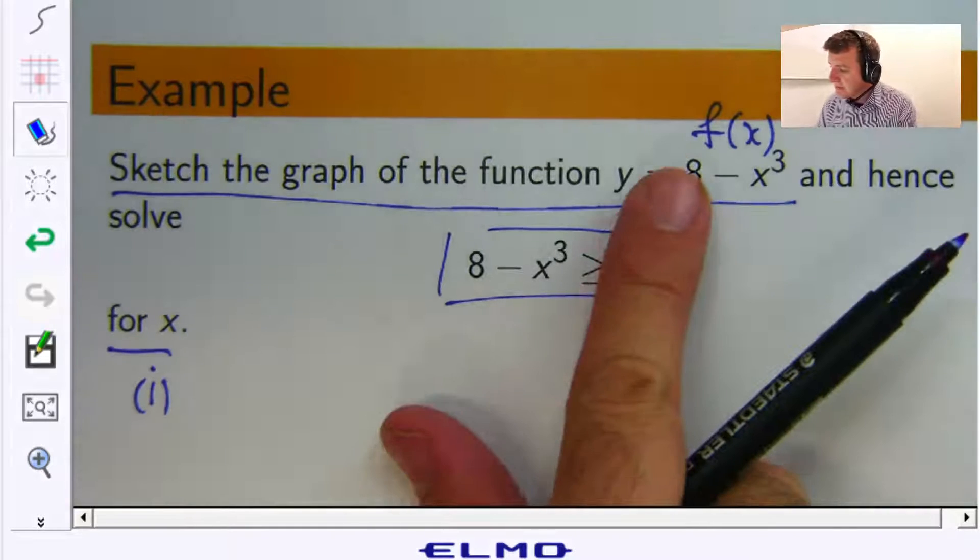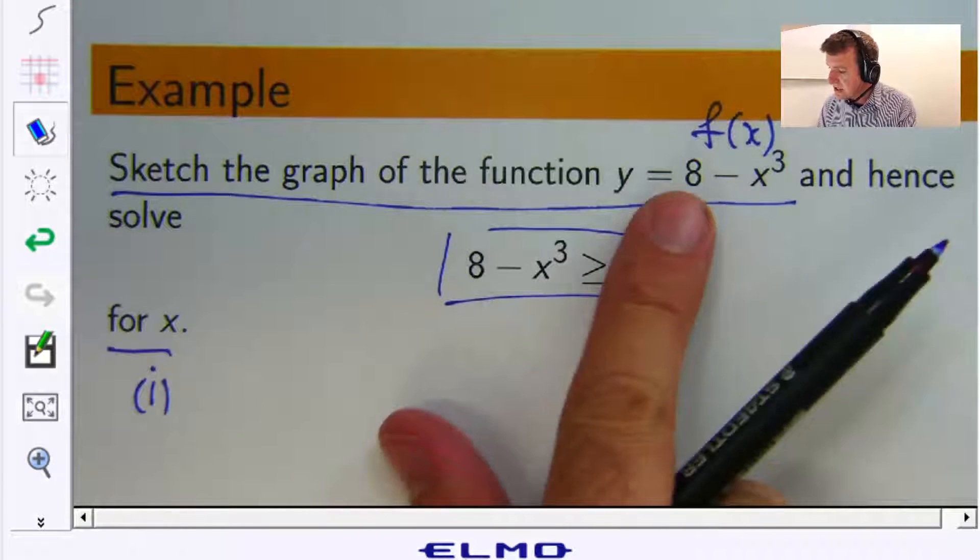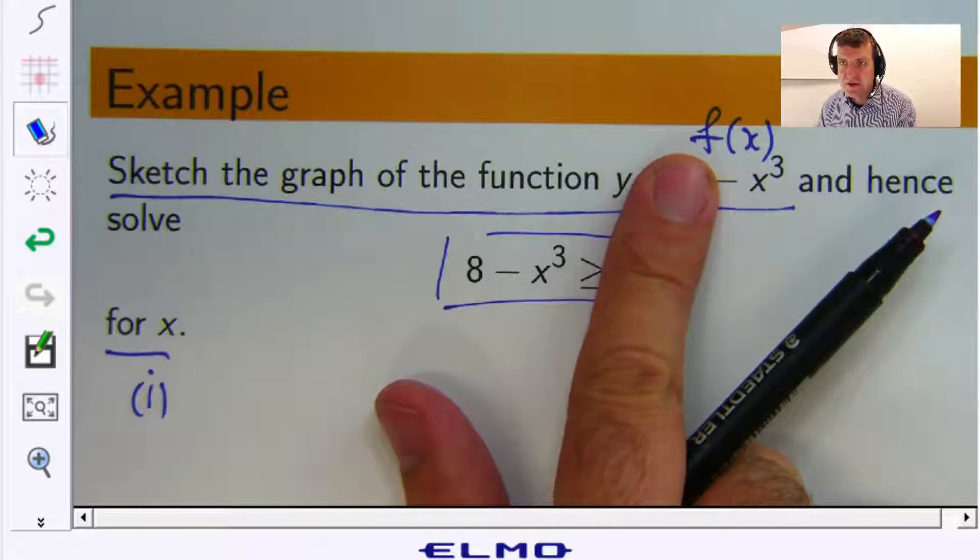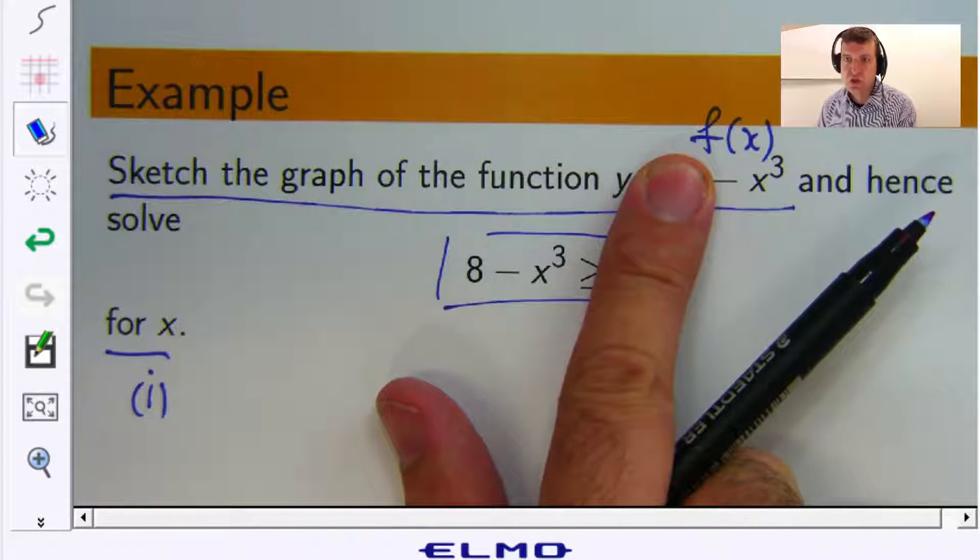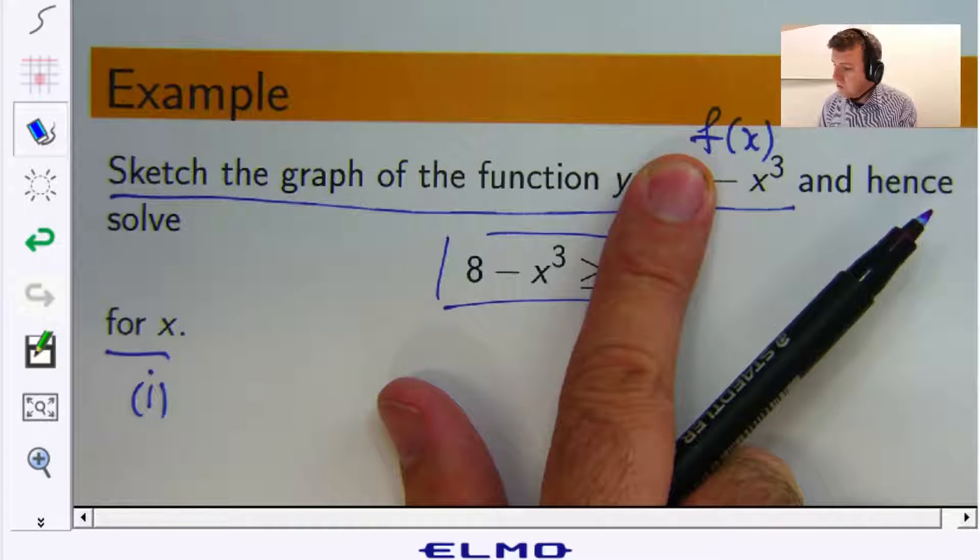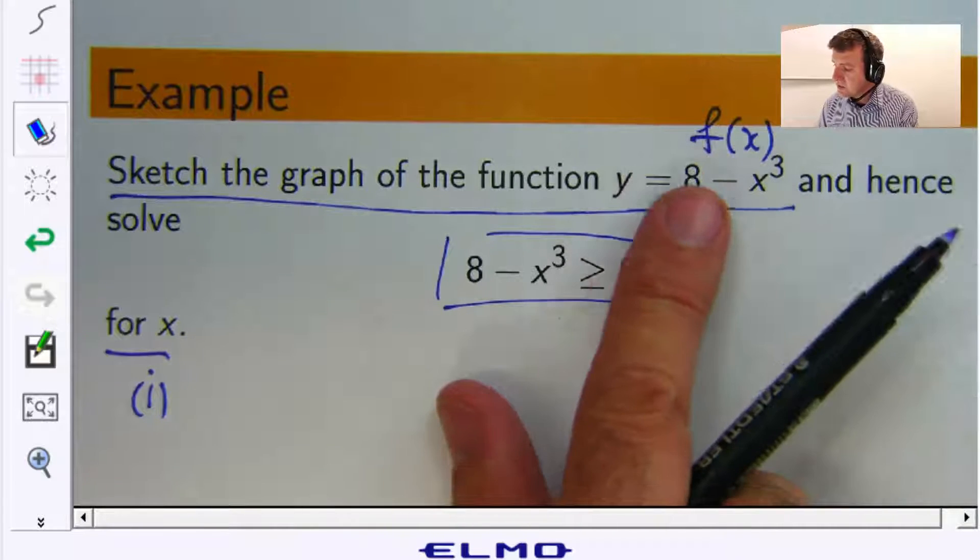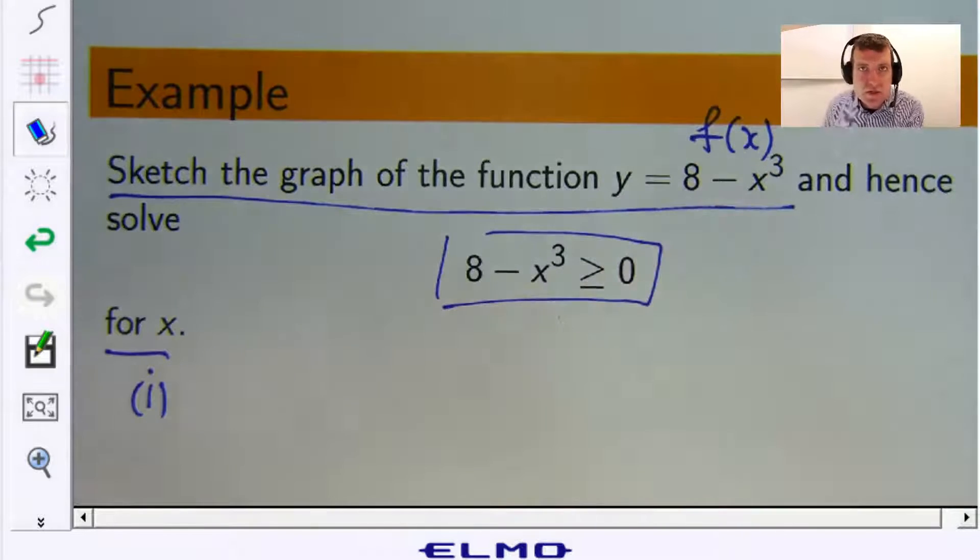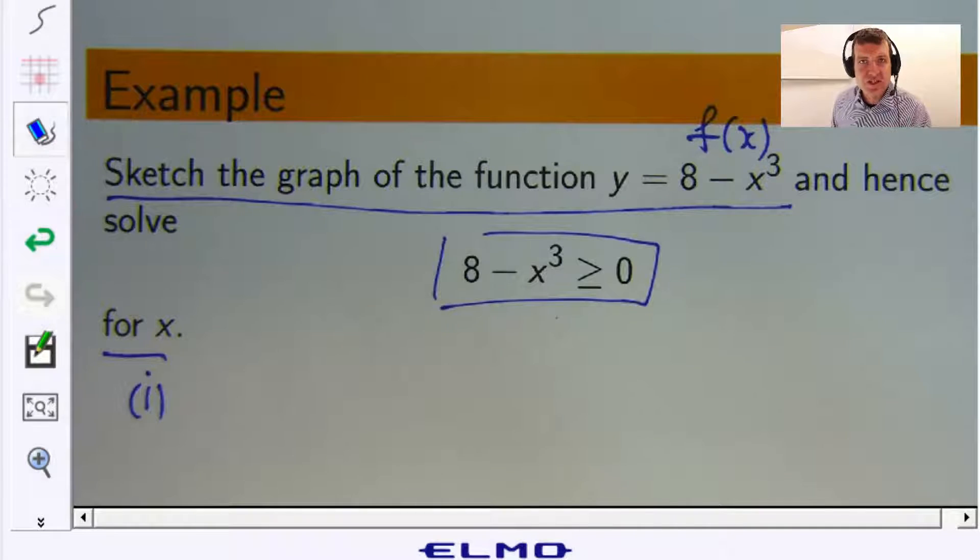So if I look at the given function and I cover up the 8, it's basically the graph of minus or negative x cubed. So all I'm really doing is looking at negative x cubed and the function adds 8 to it. So let's draw the graphs of x cubed, negative x cubed and then I'll shift the negative x cubed 8 units up the axis.